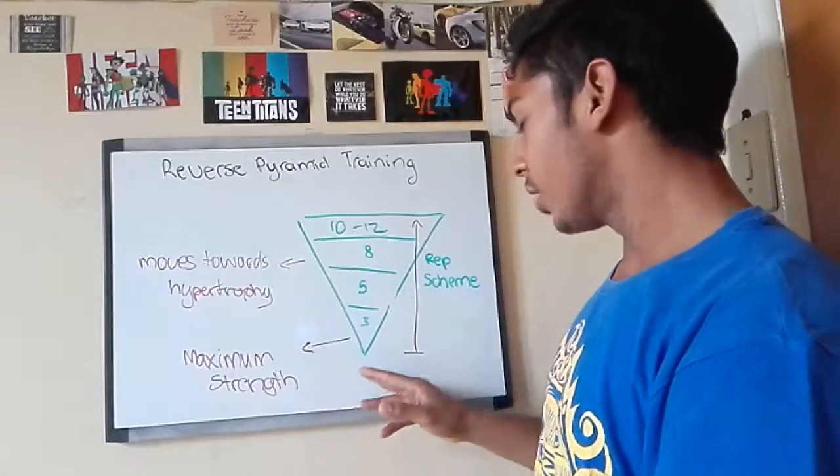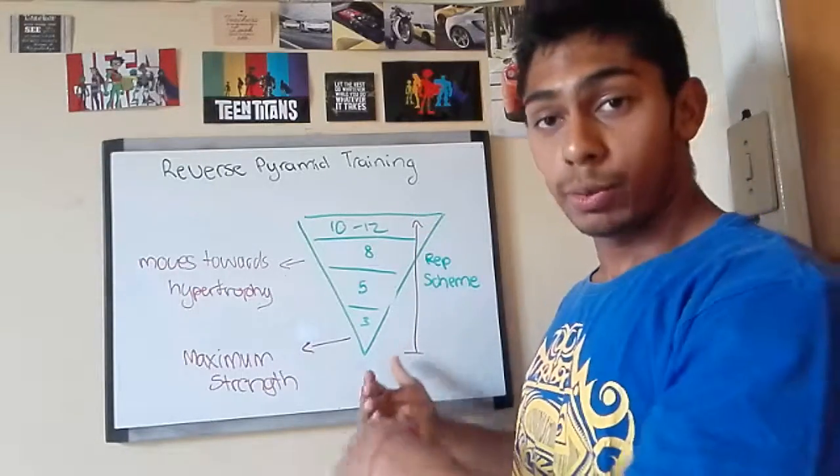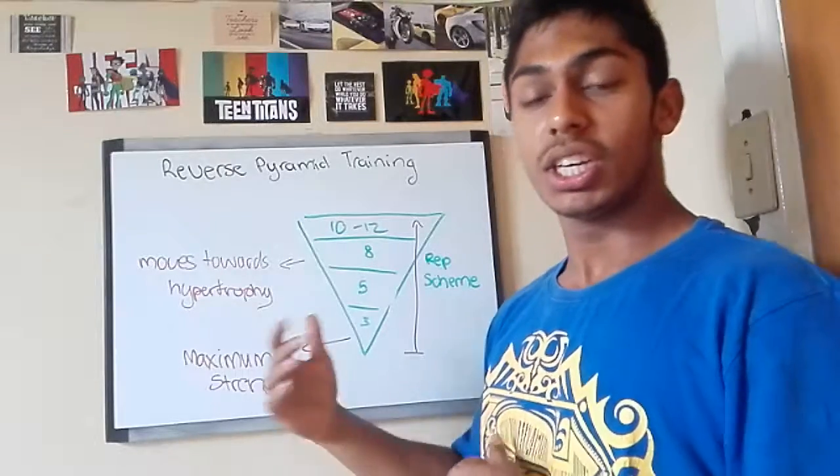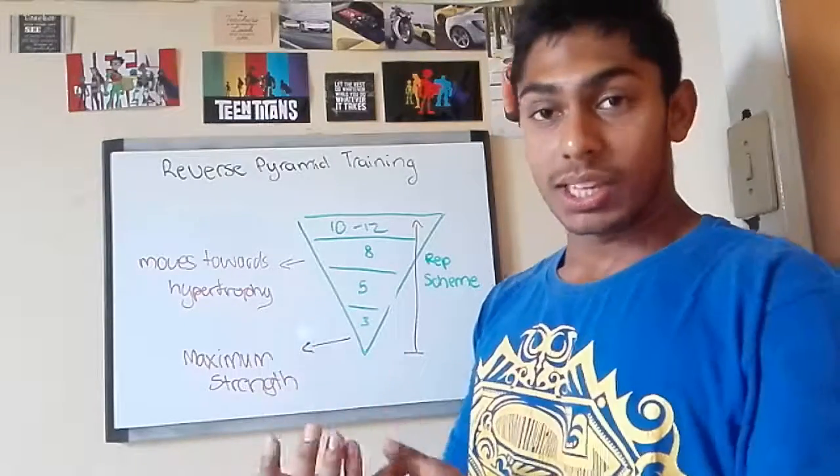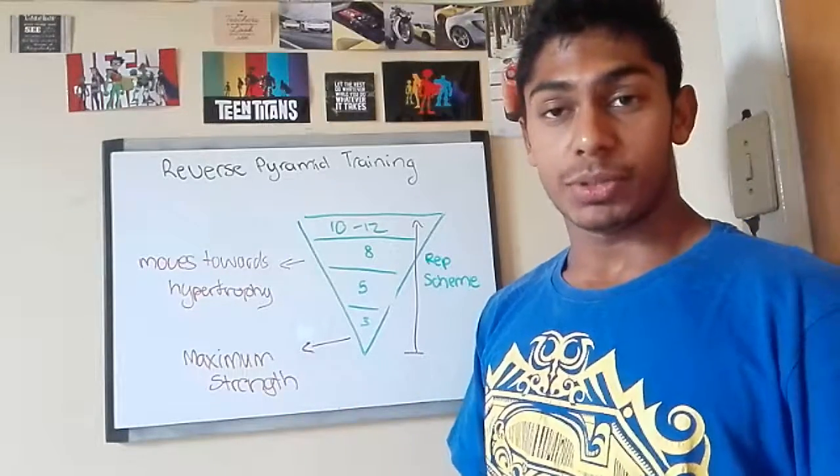As the pyramid scheme goes, we start at the bottom then move our way through the top and we start off with our three rep scheme. The whole point of starting with three reps is that you want to start off with as heavy a weight as possible and try to get as many reps as possible.